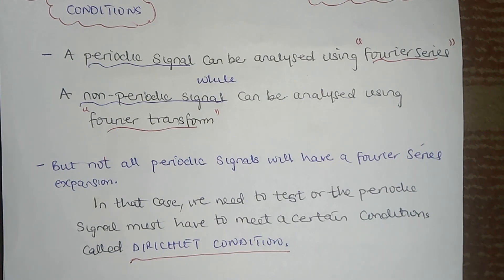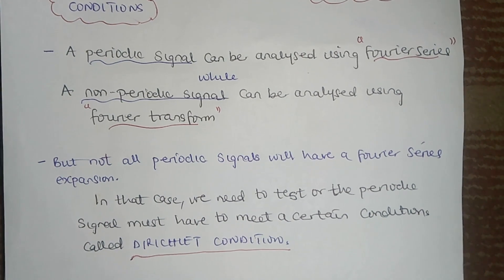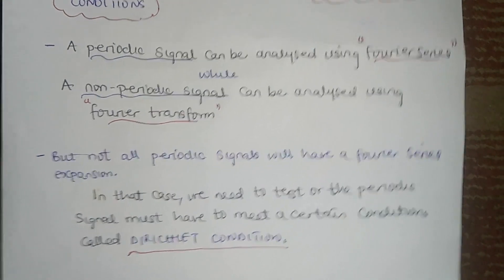The main point here is that not all periodic signals have a Fourier series expansion. Not all periodic signals can have a Fourier series expansion. So in essence, there must be a condition — for you to use a Fourier series on a periodic signal, it has to meet certain conditions called the Dirichlet conditions. It's just three conditions. Let's look at what the conditions are.